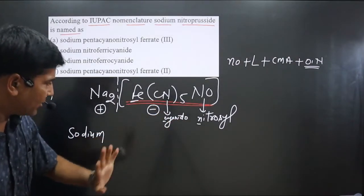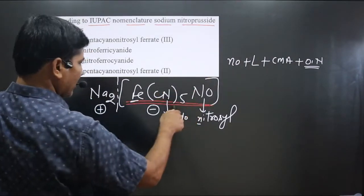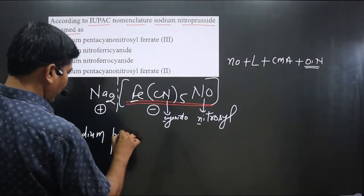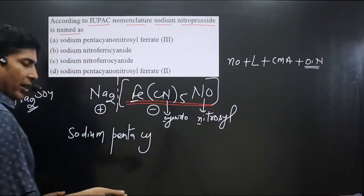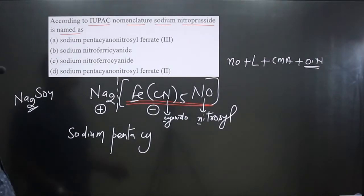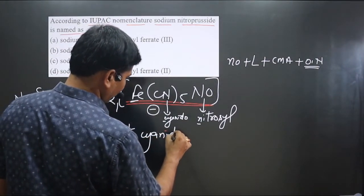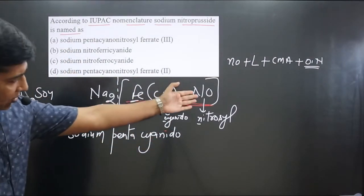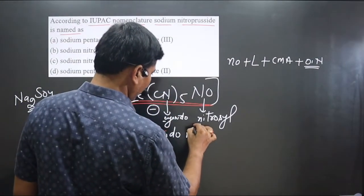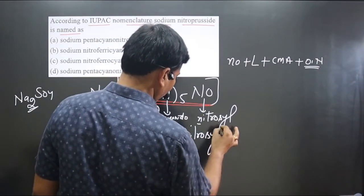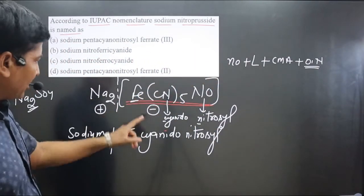First, the number of cyanido ligands: there are five, so we write penta. Then we name the ligand: cyanido. So we have pentacyanido. After that, we name the second ligand: nitrosyl. So the ligand portion of the name is pentacyanido nitrosyl.